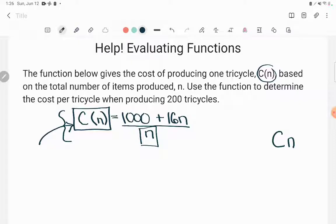When I write it like this, what I'm saying is that C, the cost in this case, so cost is our C of n. C, the cost depends on n, the number of tricycles we make. See how this said n was the total number of items produced?